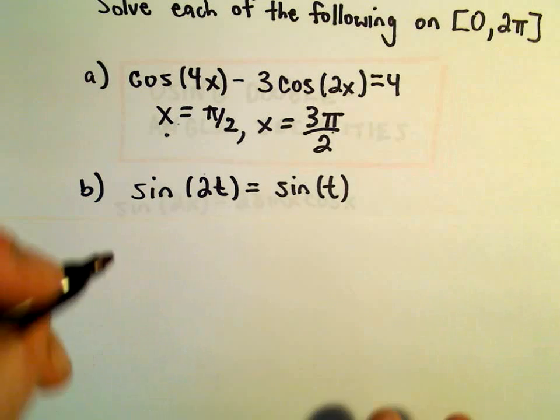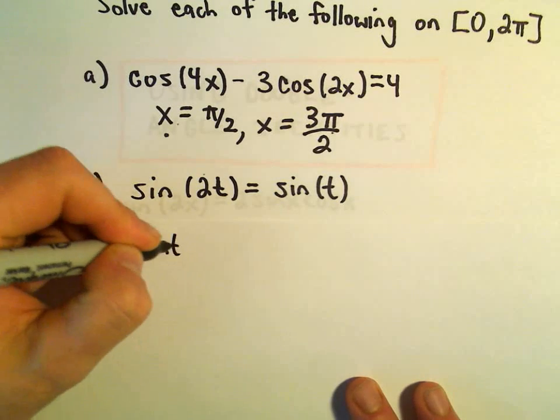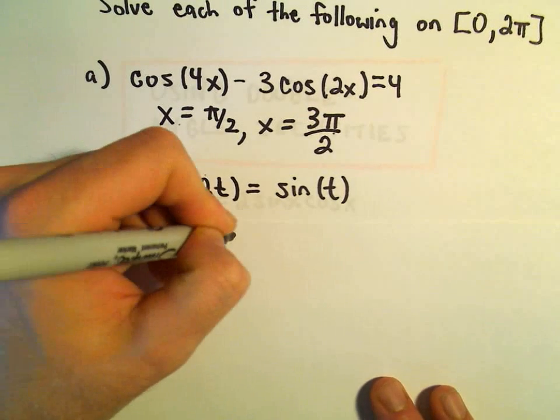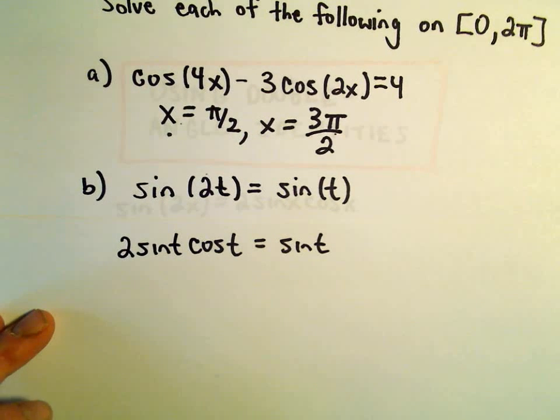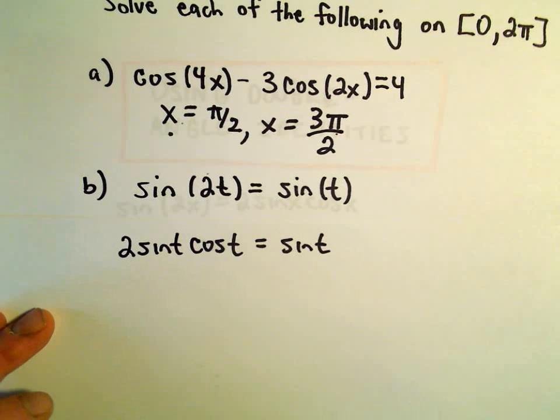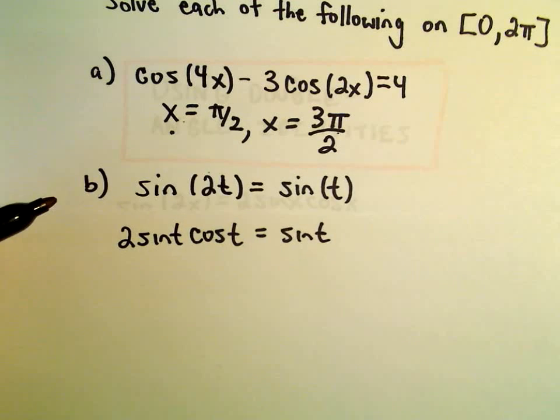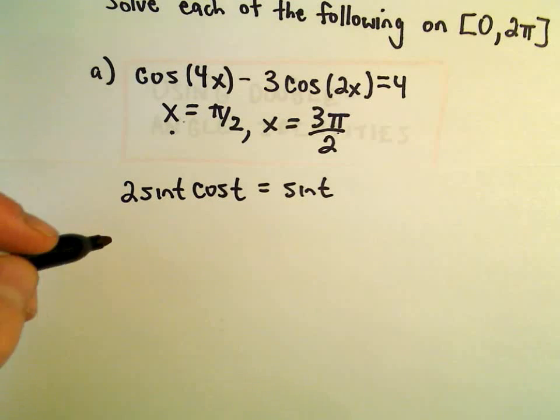Sine of 2t, we can simply write that as 2 sine t times cosine t equals sine t. And again, be careful. You don't want to divide both sides by sine t. You would end up throwing some solutions out the window.